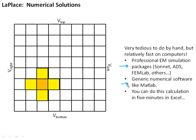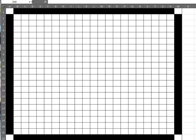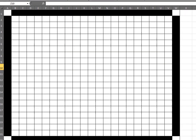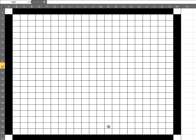This is very tedious to do by hand. It's not a technique you would do by hand with a fine grid of hundreds or thousands of points, but it's pretty easy if you have a computer. There are lots of different ways to do it. This is a very simple way, and there are a fair number of professional software packages, Sonnet, ADS, FemLab, things like that, that will do these types of calculations very rapidly with great precision. You can also do this in general numerical software like MATLAB. But surprisingly, you can do this calculation I just showed you in less than five minutes in Microsoft Office package Excel. So let me stop here and I'll start up a new little video that shows you how to do this in Excel.